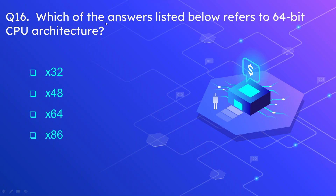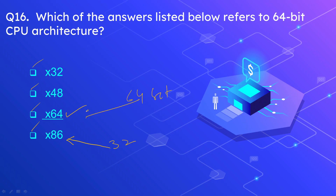Question number 16: which of the answers listed below refers to 64-bit CPU architecture? The options are X32, X48, X64, and X86. The correct answer is X64. So 32-bit architecture is denoted by X86, while 64-bit is denoted by X64.